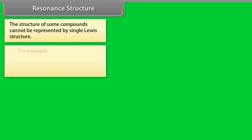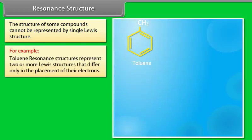Resonance structures: the structure of some compounds cannot be represented by a single Lewis structure — for example, toluene. Resonance structures represent two or more Lewis structures that differ only in the placement of their electrons.